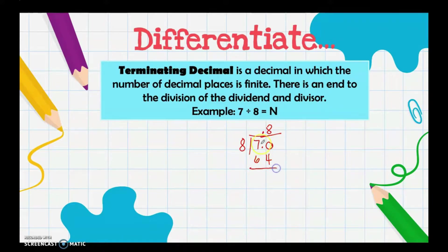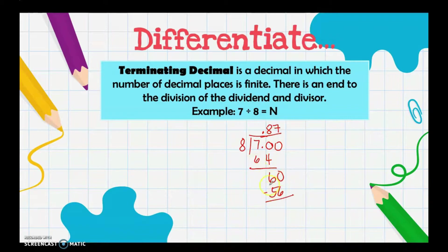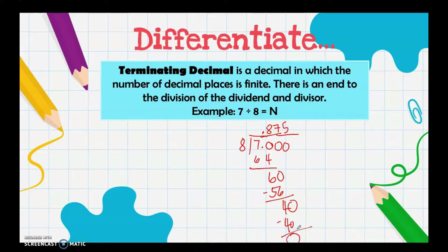We subtract to get 6, bring down more zeros, and divide again. We get 7, subtract to get 56, then 56, subtract to get 4, add more zeros until there is no remainder. The final quotient is 0.875 — this is terminating because there is no remainder and there is a finite answer; there is an end to the division of the dividend and divisor.